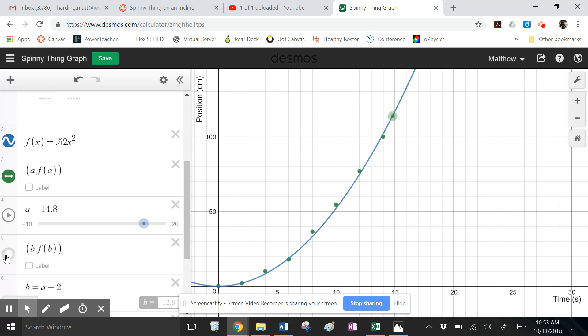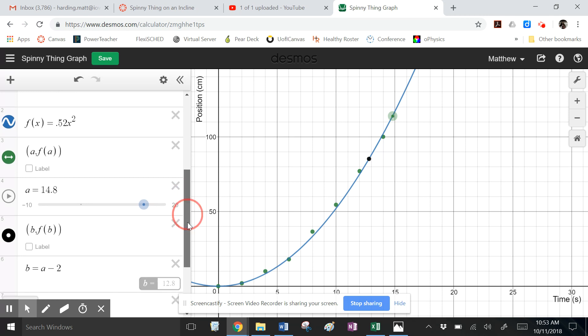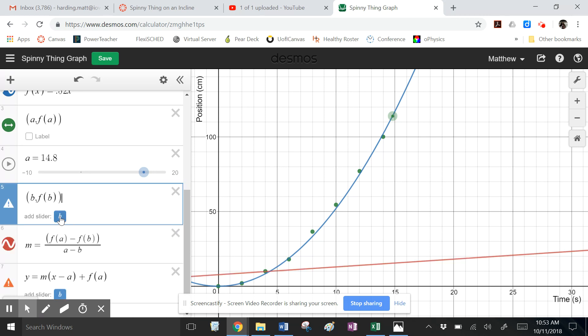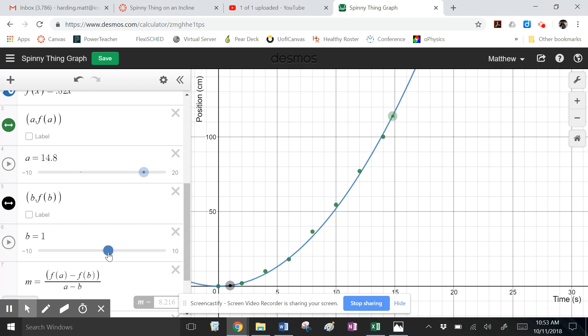After that, I added in another point, I should say, B. And I could have put in a slider. Let's see if I can get it to do that. Now I've got a slider, and I can slide B around as well.